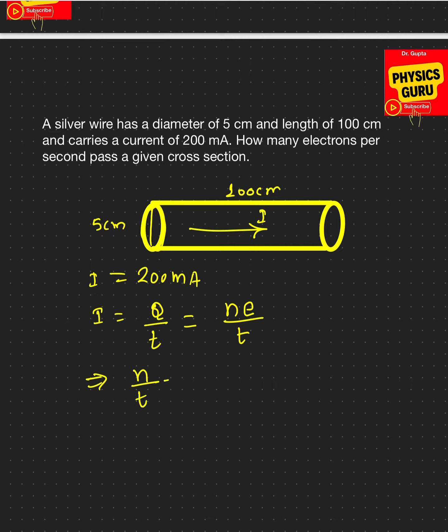It will be I divided by e, which is 200 milliampere, so it will be 200×10^-3, and e value is 1.6×10^-19. And if you do the math you'll get your answer.